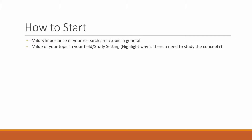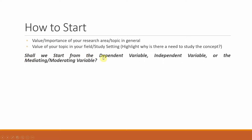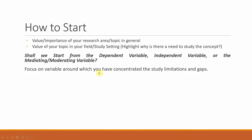We've got an independent variable, a dependent variable, and mediating or moderating variables. Where do we start? In order to answer this question and simplify this issue, I have formulated a few tips. Shall we start from the dependent variable, the independent variable, or the mediating or moderating variable? The answer is quite simple: focus on the variable around which you have concentrated the study limitations and gaps. So you start from the variable around which you have situated your gaps.